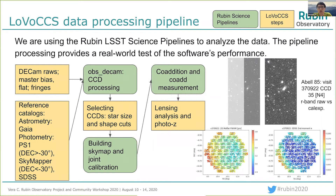The figures at the bottom right show the distribution of star sizes and shapes in a visit. Then we build a sky map, run joint calibration, co-addition, and co-add measurement, and finally do the lensing analysis and the photo-z measurement.